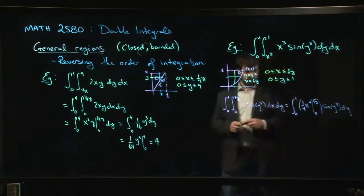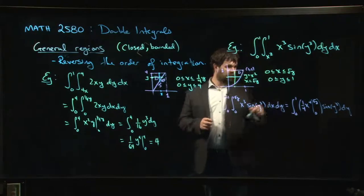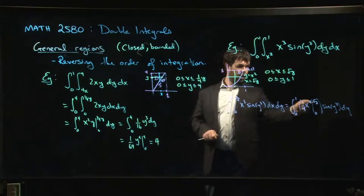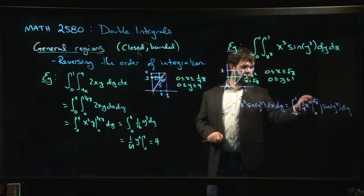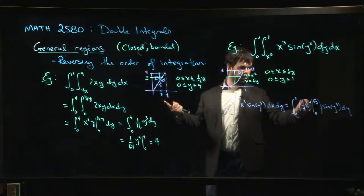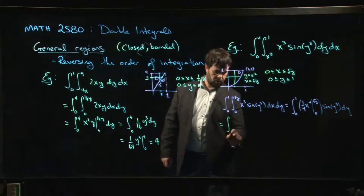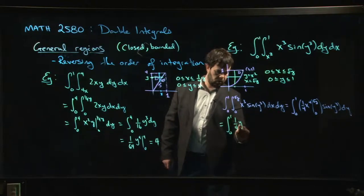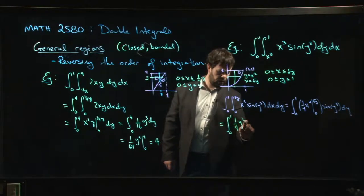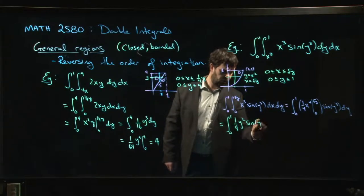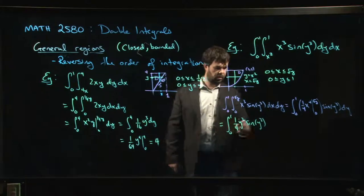I think my red might be running out on me, so let's plug in the limits. Upper limit, we have the square root of y to the fourth power, so we square it once we get y, we square it again we get y squared. So this gives me 0 to 1, one quarter y squared, lower limit is just zero, sine y cubed dy.